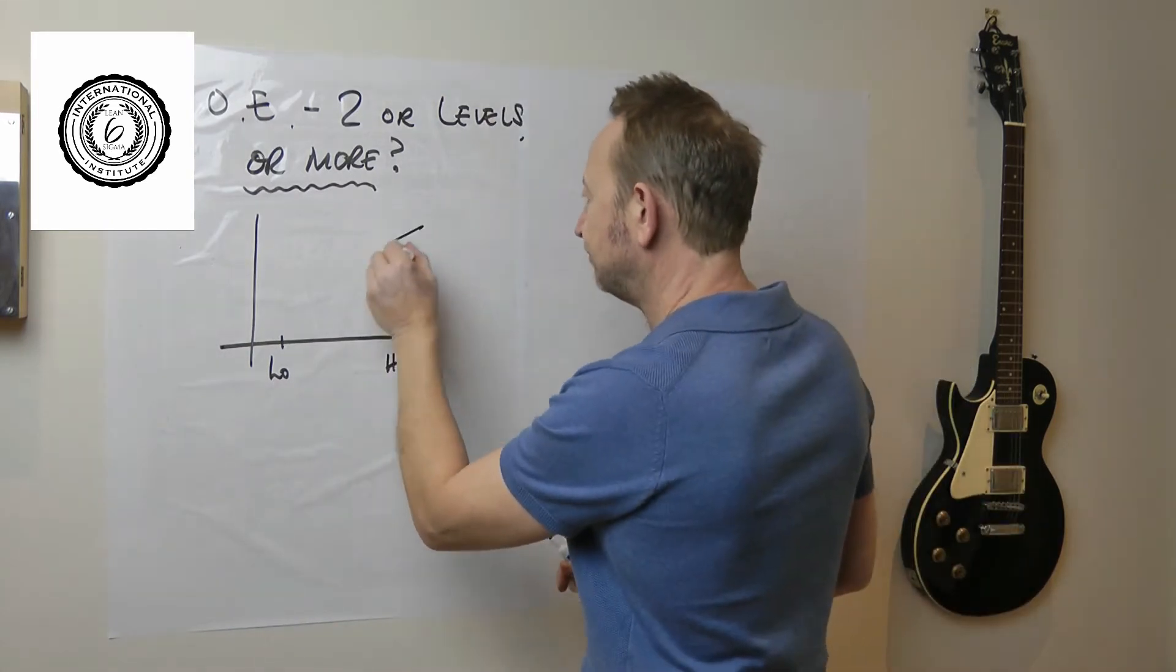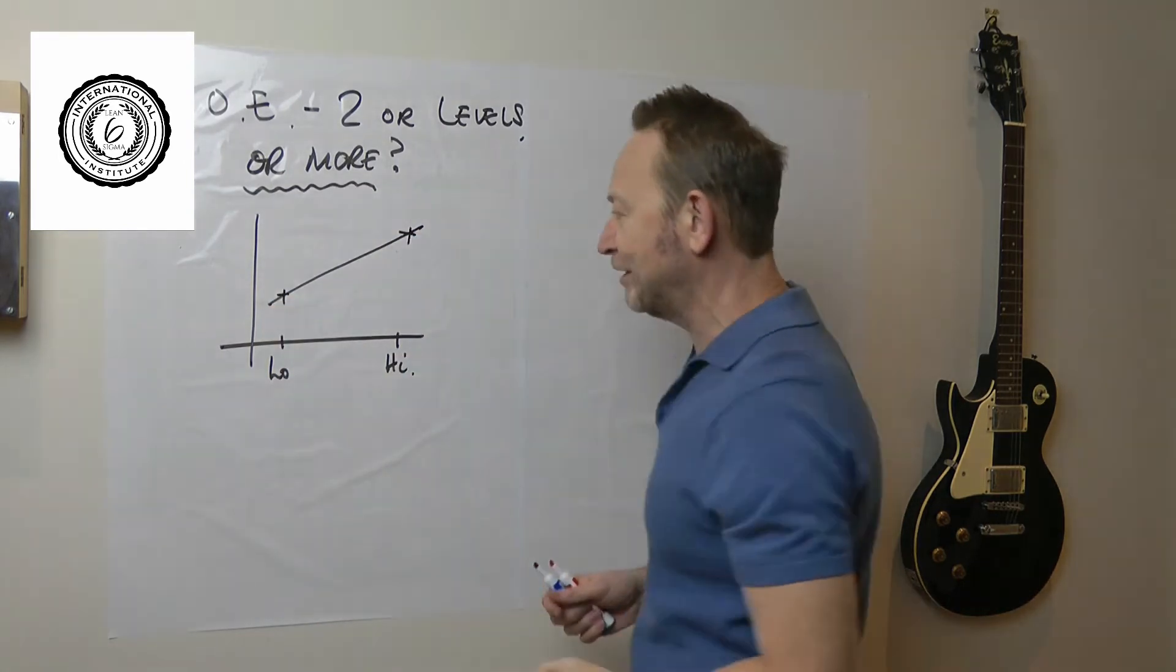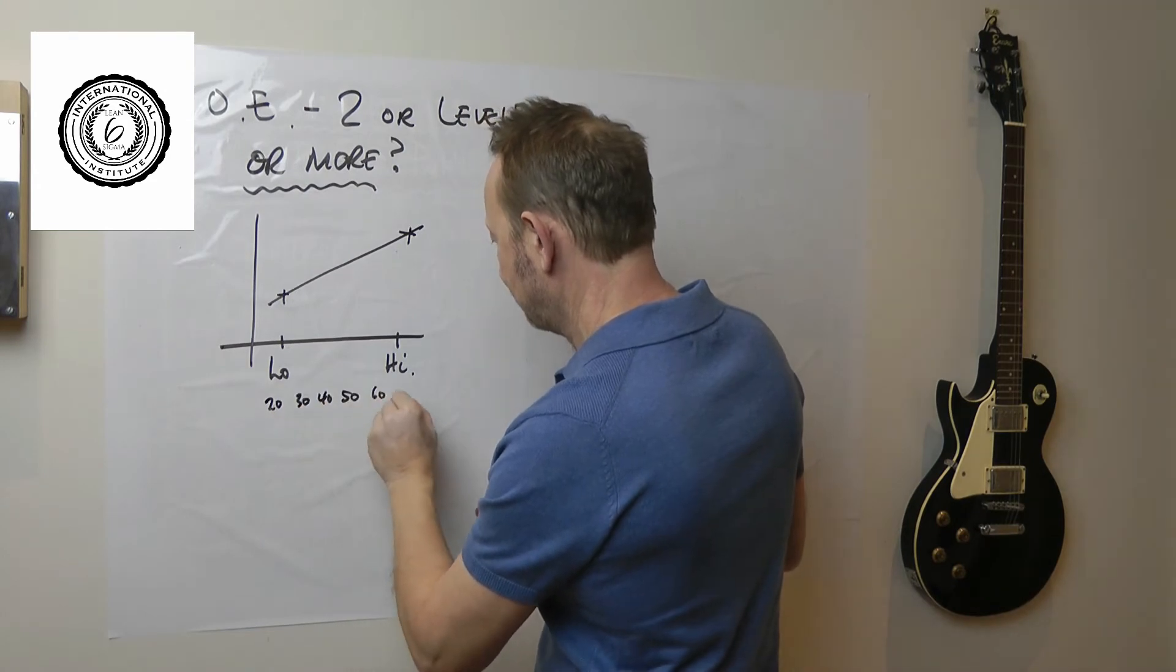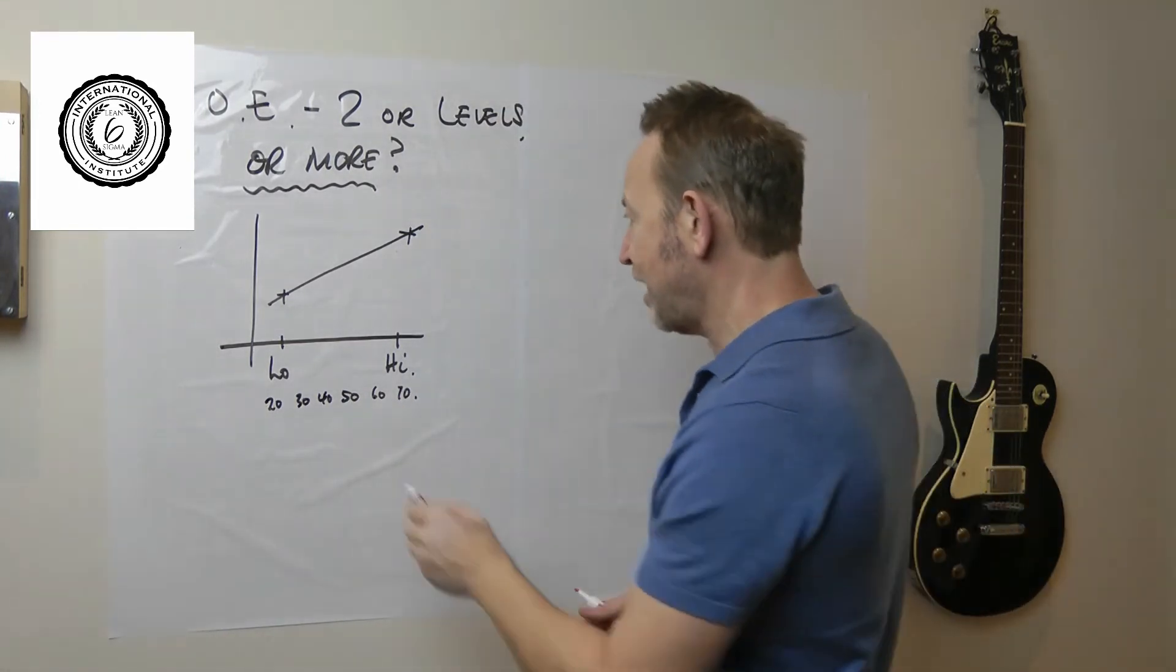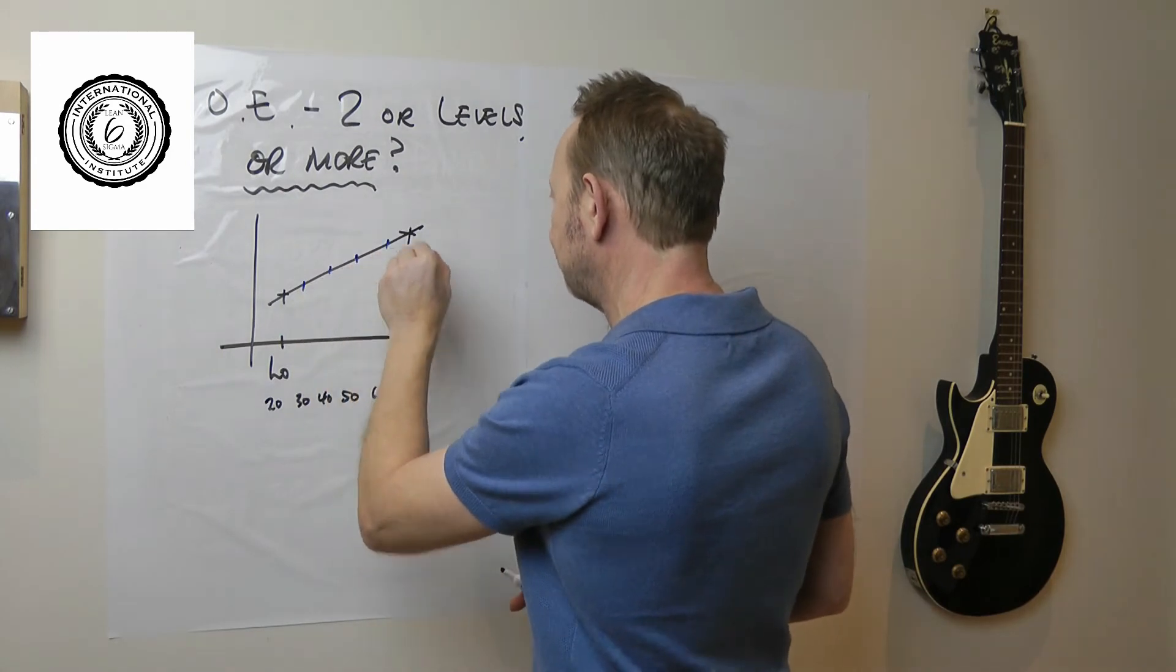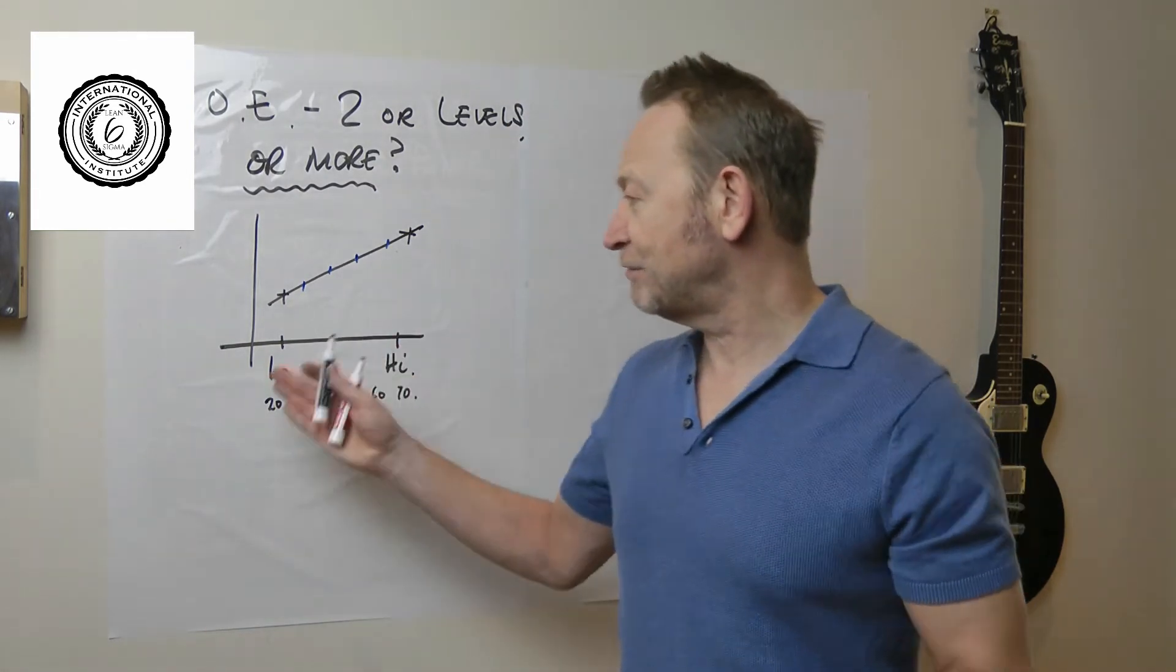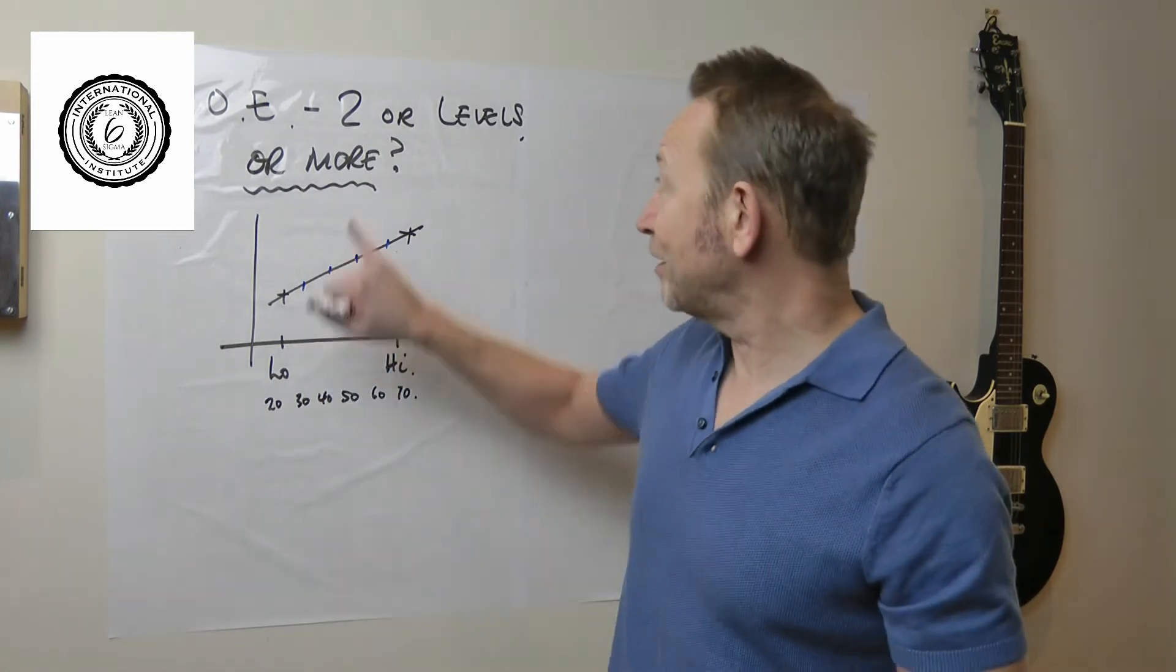But look, if the relationship is going to be a straight line anyway, so I could have gone 20, 30, 40, 50, 60, 70 seconds, I could have done all of those tests if I'd wanted to, but what would they have all done? Well, they would have all dropped on the line if this is a linear relationship. So if there's a linear relationship, what's the minimum number of tests I can get away with?